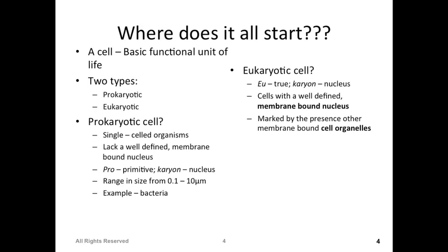There are actually two kinds of cells. One are prokaryotic cells, the other are eukaryotic cells. In prokaryotic cells, they don't have a very well-defined membrane, and they also don't have a well-defined nucleus. These are mostly single-cell organisms, which are composed of only a single cell, like bacteria.